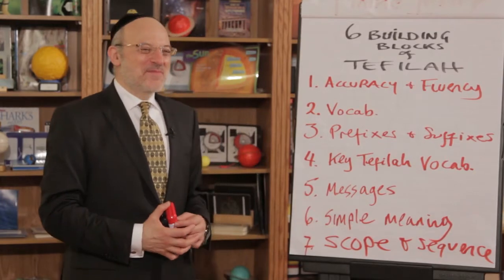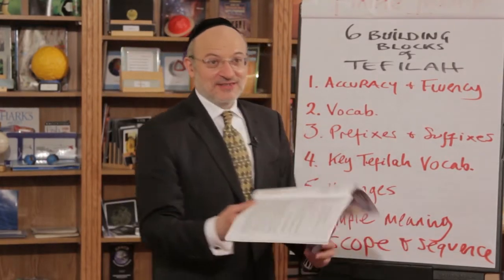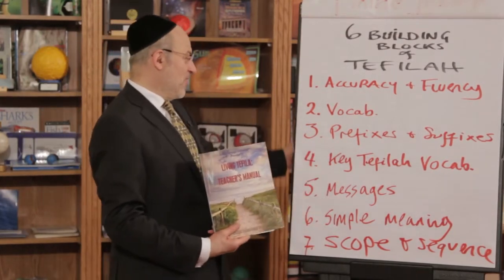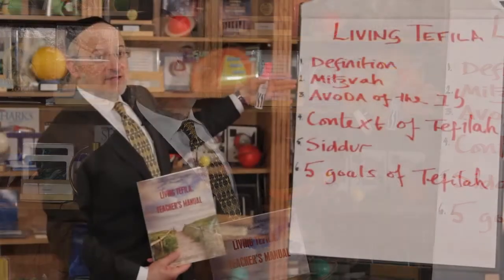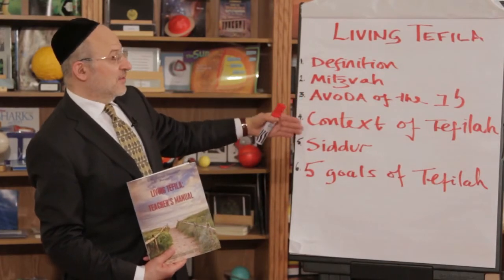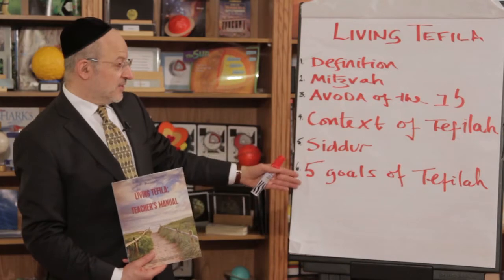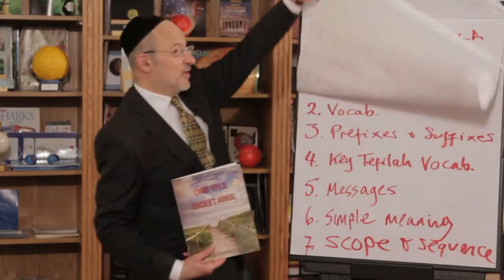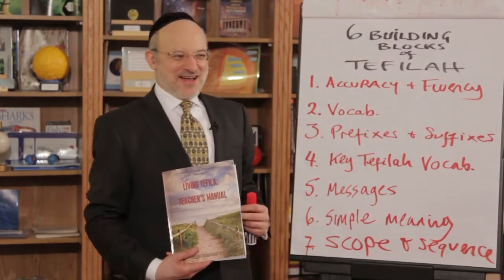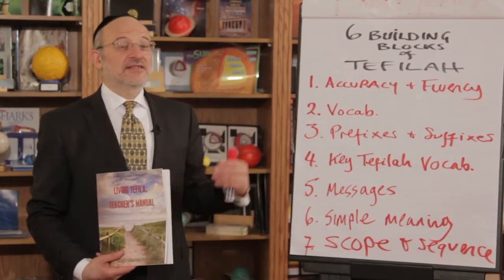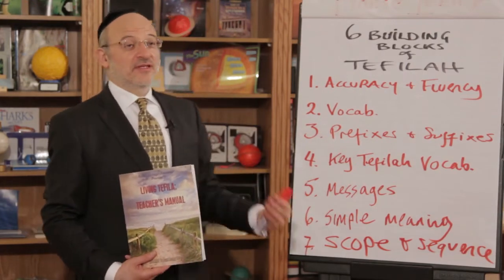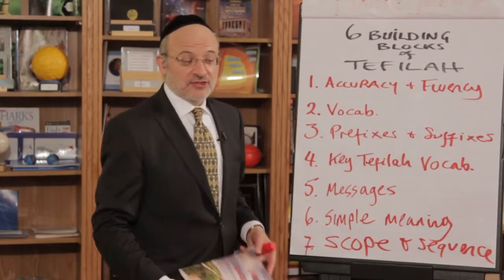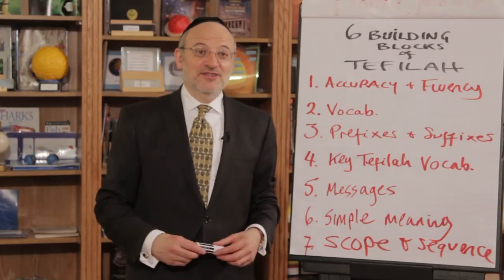To start this off we're going to look at Modeh Ani. Most of what you'll hear is part of the Living Tefillah manual, covering all six areas: the definition, the mitzvah of davening, avodah she'ba'lev, the context of tefillah in the midst of loving Hashem, why the siddur, and the five goals of tefillah - found in the hagdama. The six parts we're now looking at are in the second section of the same manual, all delineated clearly with footnotes and sources.